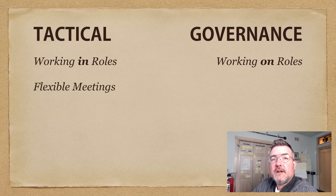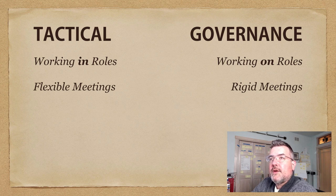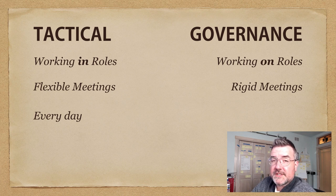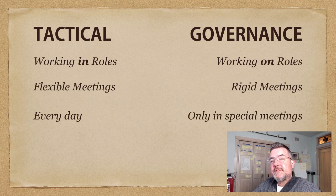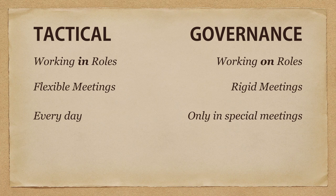With tactical, you have flexible meetings called tactical meetings — they still follow a process, but it's much more flexible. Whereas in governance, meetings are very rigid and structured, because when you're doing governance you're actually changing the rules for how you work together, so it needs to be very specific. Tactical work happens every day. Governance only happens in special meetings — usually every two weeks or every month. The governance changes only happen in the governance meeting; tactical things happen all the time.